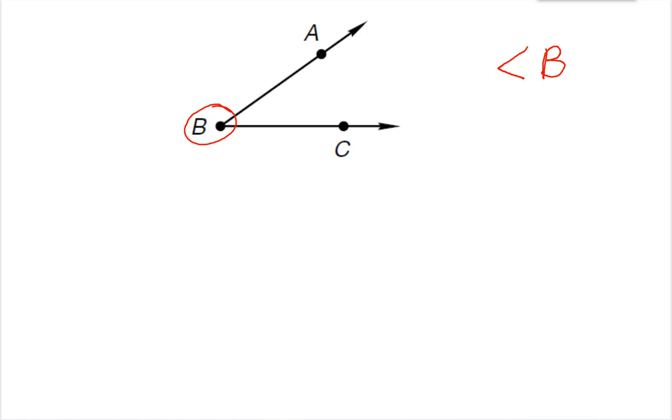I can also name this angle using all three of the letters, but the vertex always is the middle letter. So this could be either called angle ABC, so it goes this way, or I could call it angle CBA. As long as the letter B is in the middle, either way is correct.